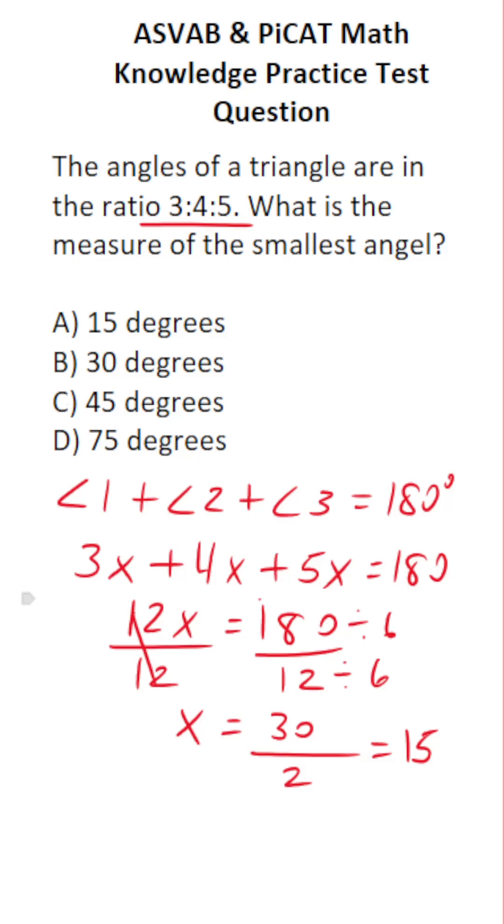So we know angle 1 is the smallest angle, and x is 15 degrees. So angle 1 is 3x. 3 times 15 is 45. The smallest angle in this triangle is C, 45 degrees.